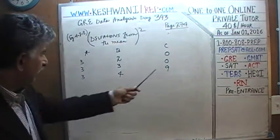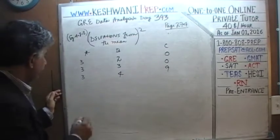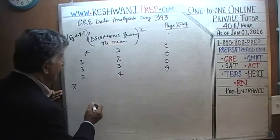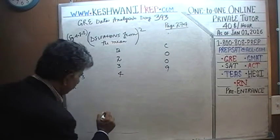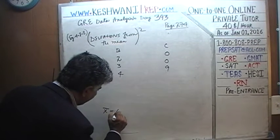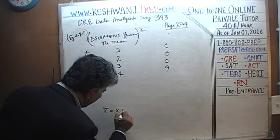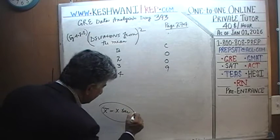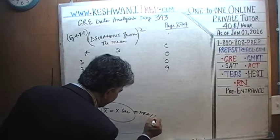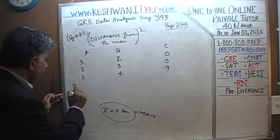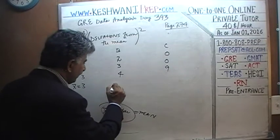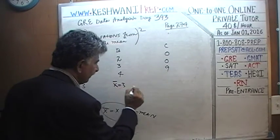As you can clearly see, in all three cases, x-bar — which is how we represent the mean, read as 'x-bar' — equals 3. In each of these three cases, the mean is 3.